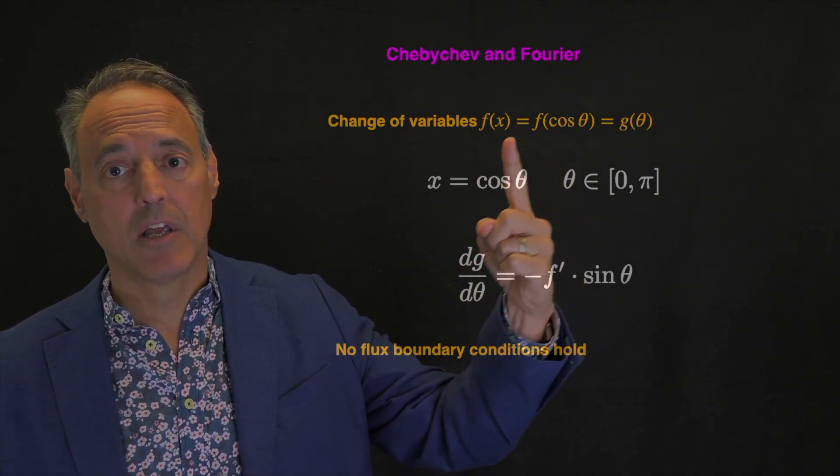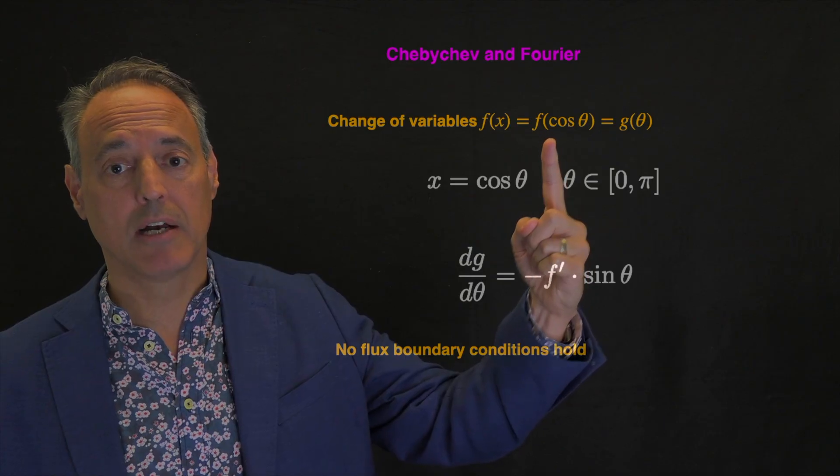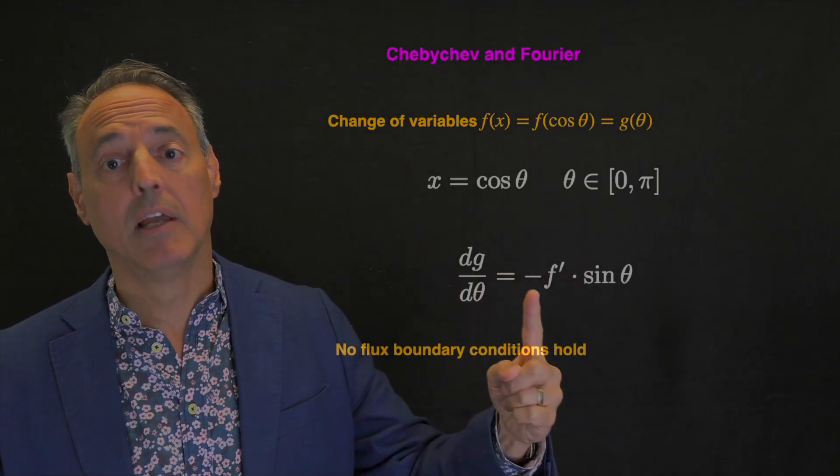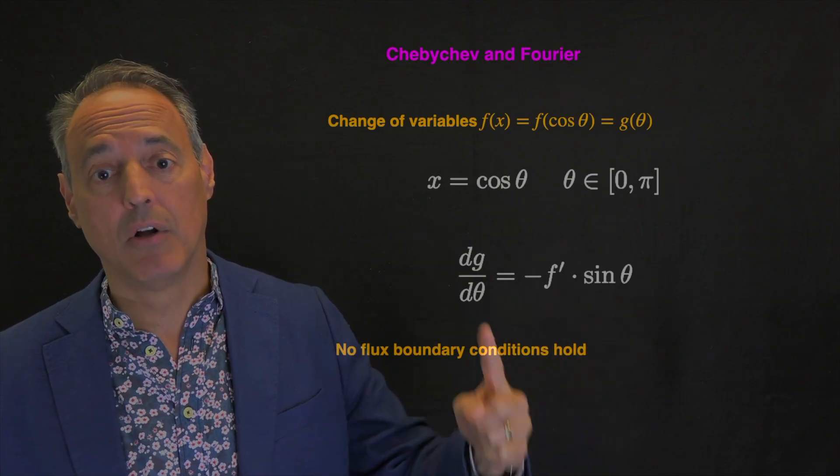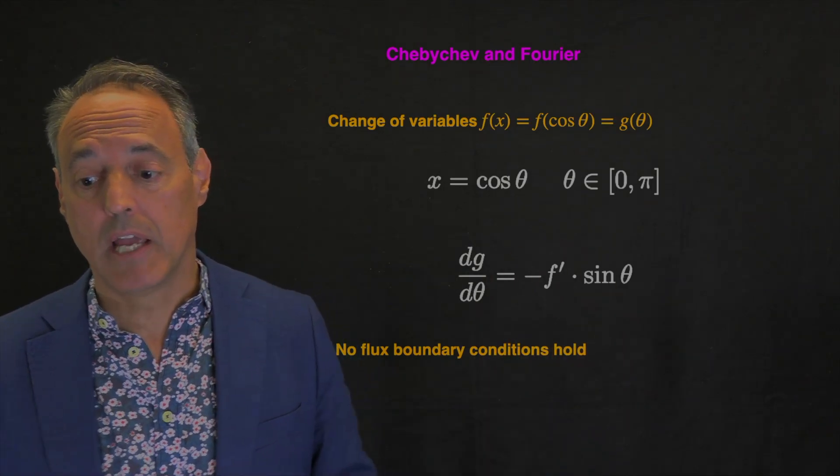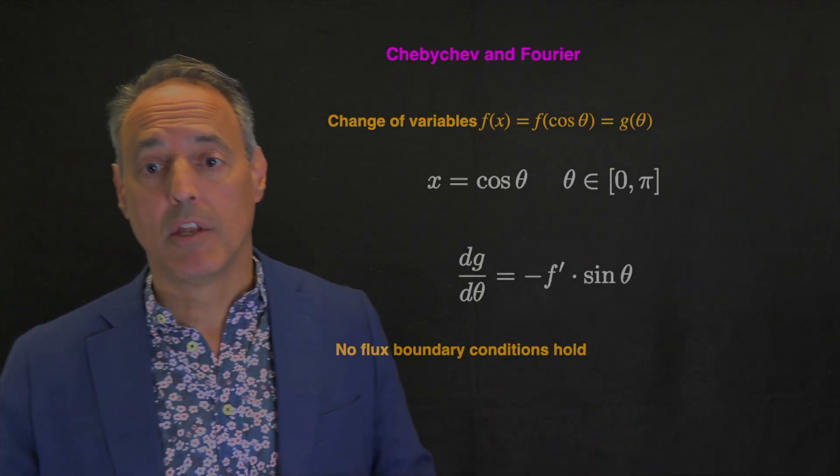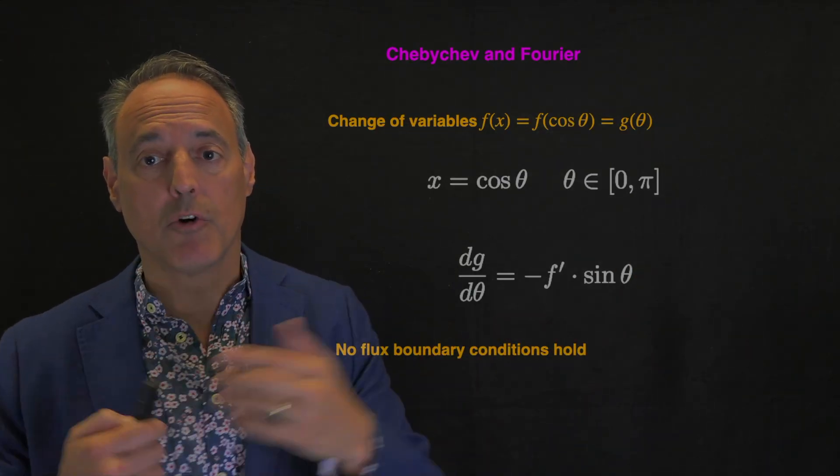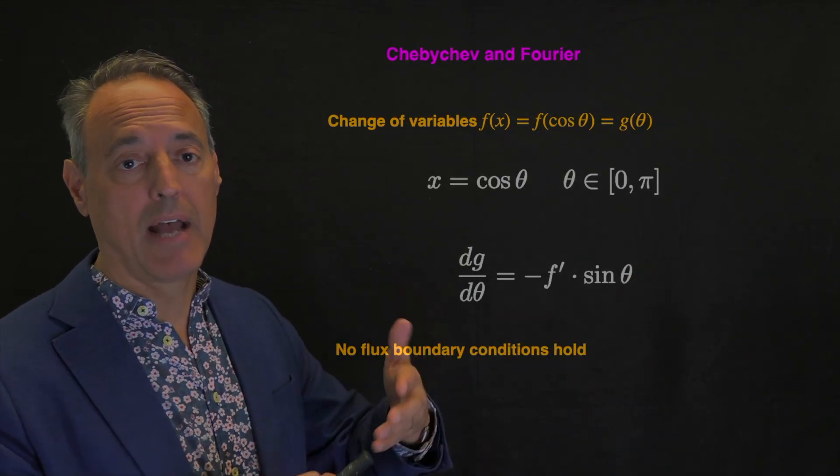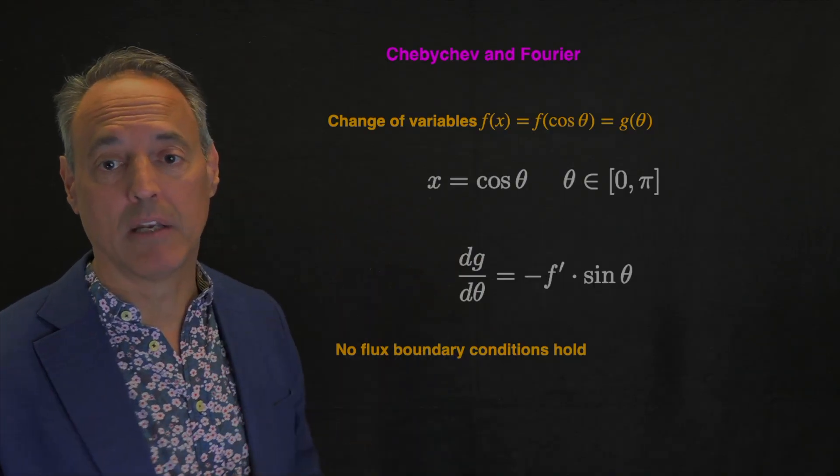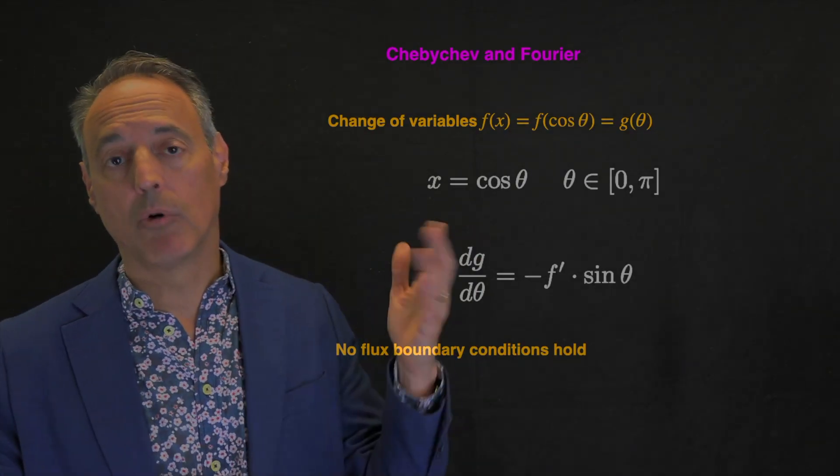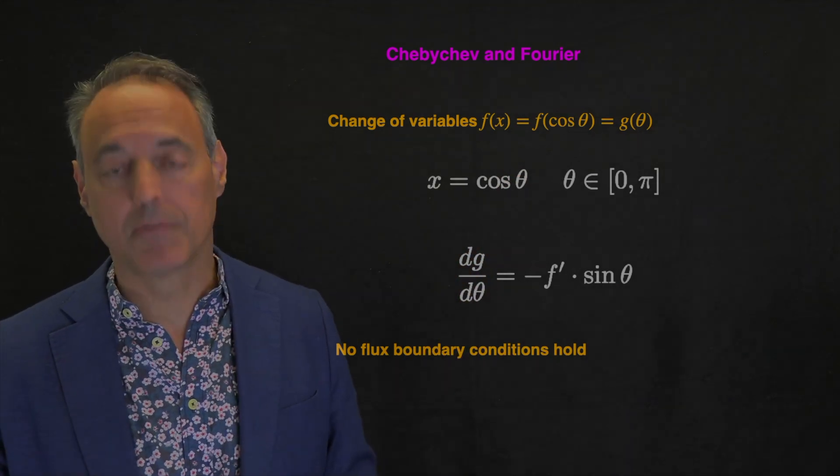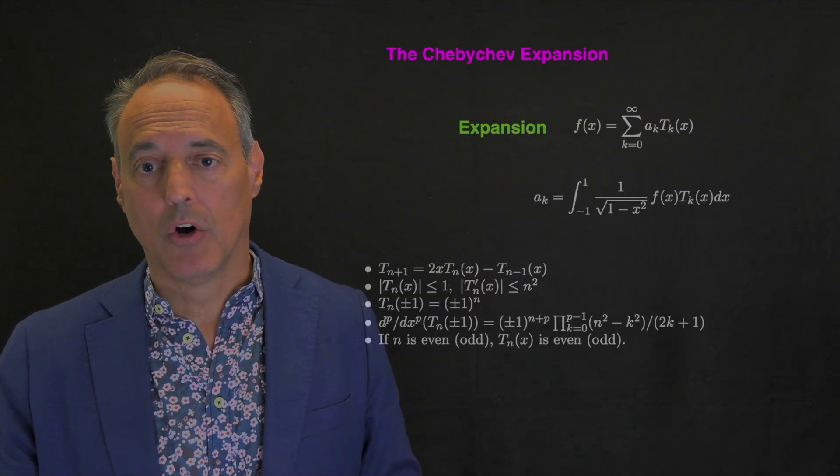If I take the derivative dg d theta, I can use the chain rule to get this. No flux boundary conditions hold in the Fourier transformed domain, but I have to go back to the original domain for what the boundary conditions actually are in the x domain itself.